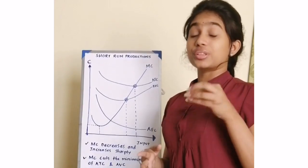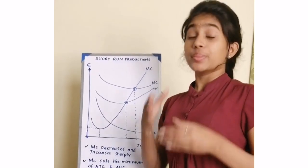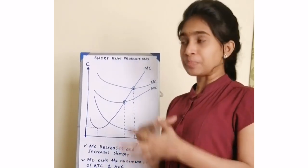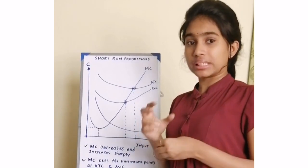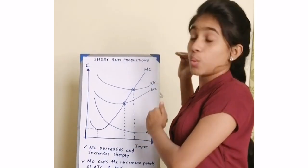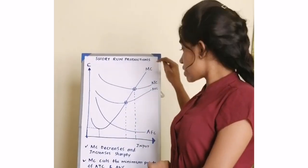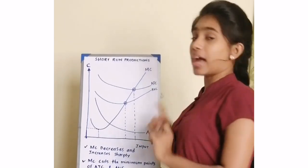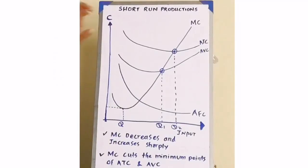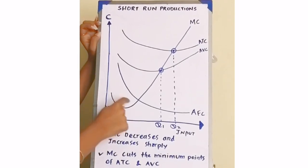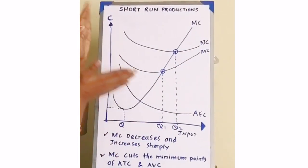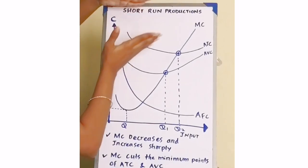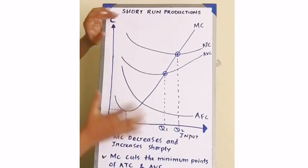The next repeatedly asked question is the relationship between the short-run production cost curves. For this question, the answer will contain a graph with the curves of marginal cost, average total cost, average variable cost, and average fixed cost. After drawing this graph, what is required is to describe how these curves behave in this particular situation.